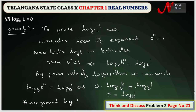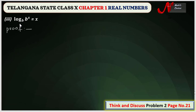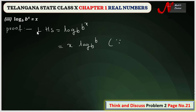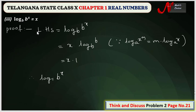Finally, we prove log b power x base b equals x. By the power rule of logarithm — since log x power m base a equals m into log x base a — we can write log b power x base b as x into log b base b. Since log b base b equals one, this gives x into one, which equals x. Hence proved.